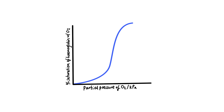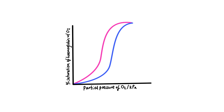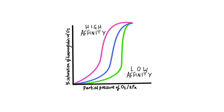Sometimes an oxygen dissociation curve will shift to the left or to the right, and this is linked to affinity. If the curve shifts to the left, hemoglobin has a high affinity for oxygen. If it shifts to the right, hemoglobin has a low affinity for oxygen.